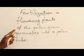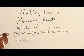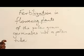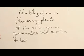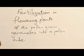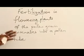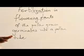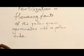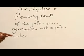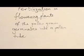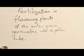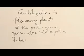A pollen grain is made up of two layers: the exine and the intine. The exine is the outer layer, which is rough and sometimes has hair or spines. The intine is the tissue inside, and the intine carries a nucleus.